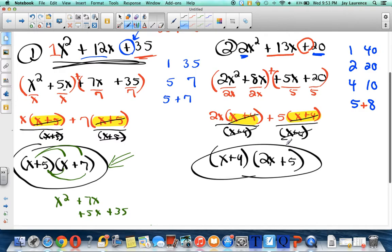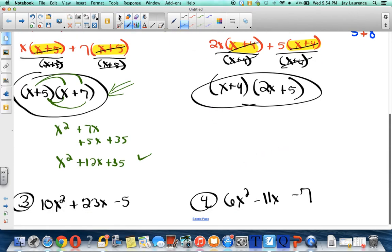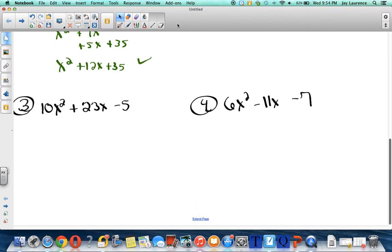And that will get me the quantity of x + 4 times the quantity of 2x, because that's all that's left here, plus 5. And there you go. If you double distribute that, you should get the original problem. I'll leave that to you to verify.